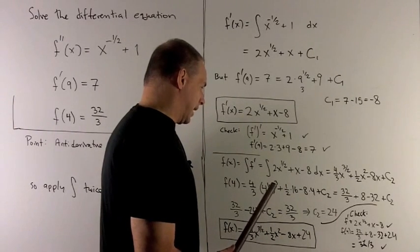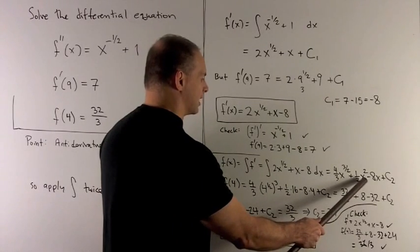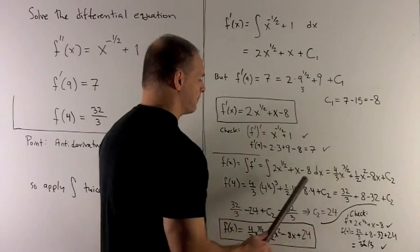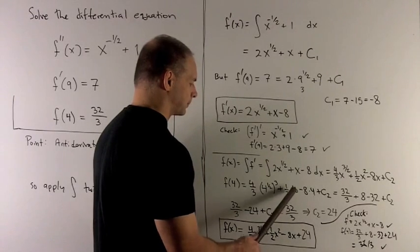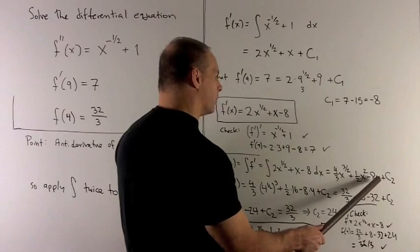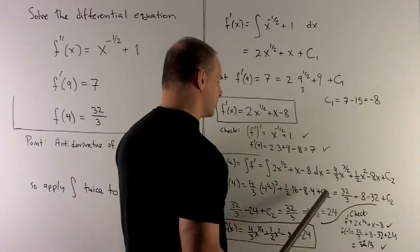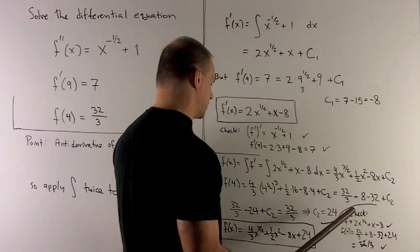I go to my next term. I put a 4 into here. That gives me 4 squared, gives me 16 times 1 half. That's going to give me 8 also. I go to the next term. I put a 4 in. 8 times 4 gives me 32. And then c2 just hangs around, and then we see what happens.